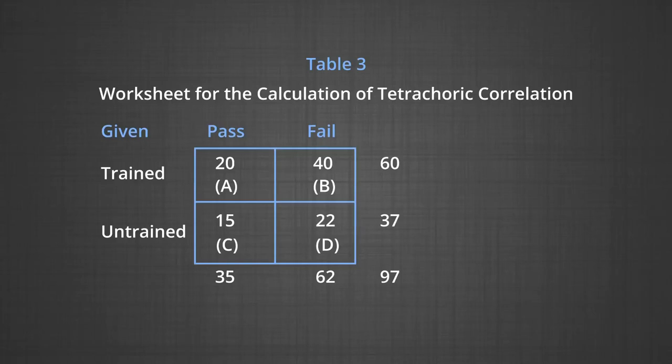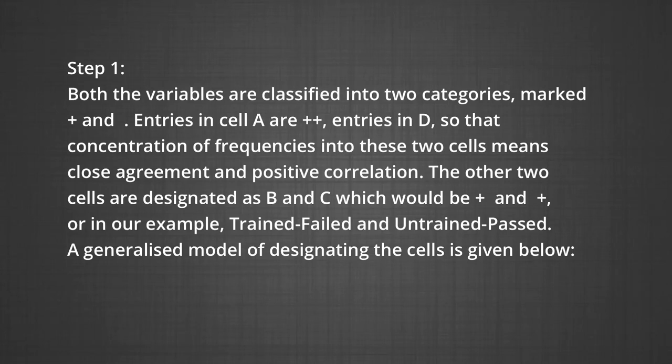We have calculated: AD = 20 × 22 = 440, BC = 40 × 15 = 600. We classify into two categories marked plus and minus. Entries in cell A are plus-plus, entries in D are minus-minus. Concentration of frequencies into these two cells means close agreement, positive correlation. Other two cells are designated as B and C, which would be plus-minus and minus-plus. In our example, trained-failed, untrained-passed.